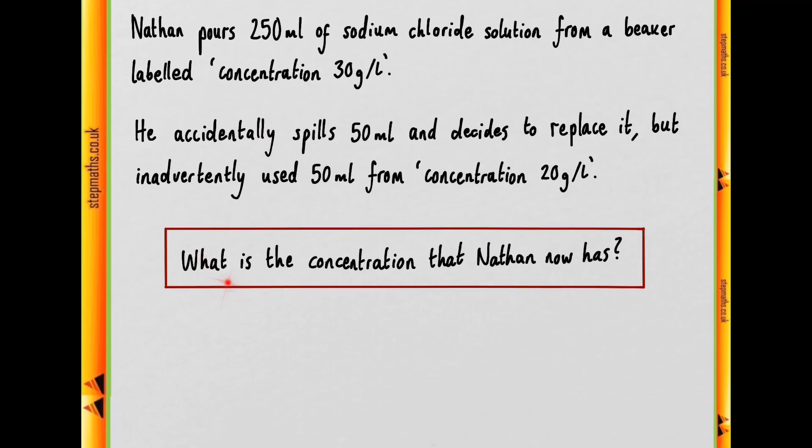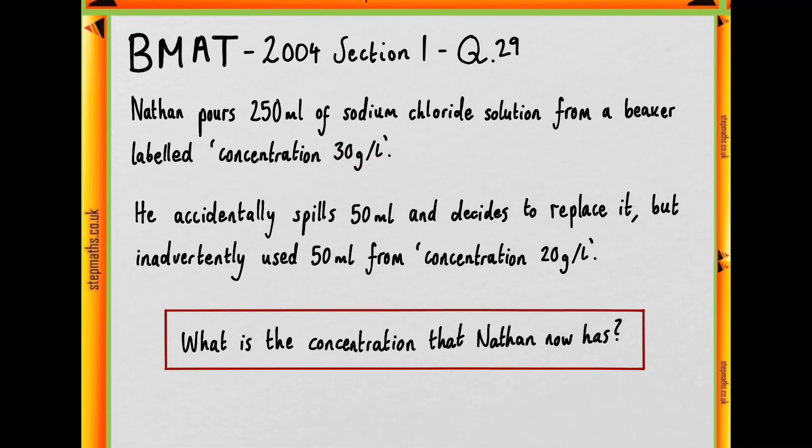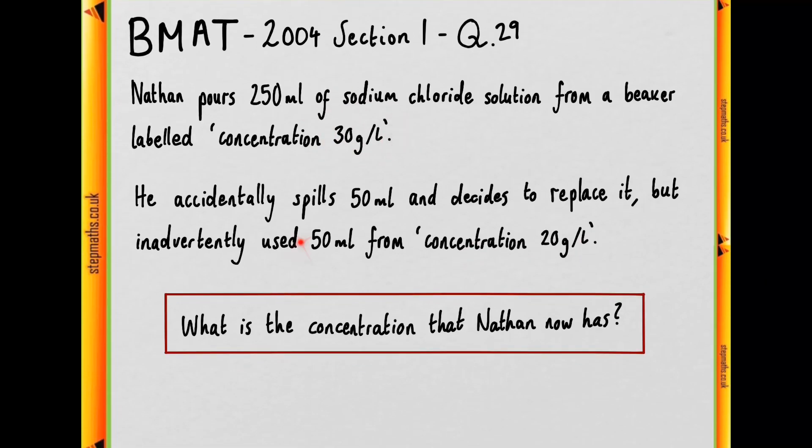We're then asked to work out what the concentration is that Nathan now has given that he neither has 30 nor 20. He was aiming for 30 but ended up putting 50 ml from this lower concentration beaker. So how would we go about working this out?